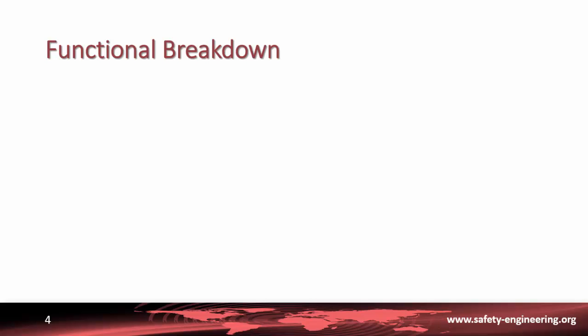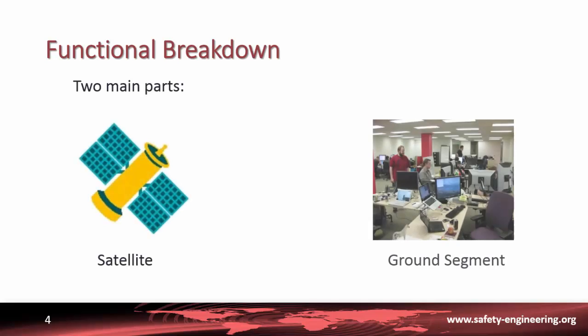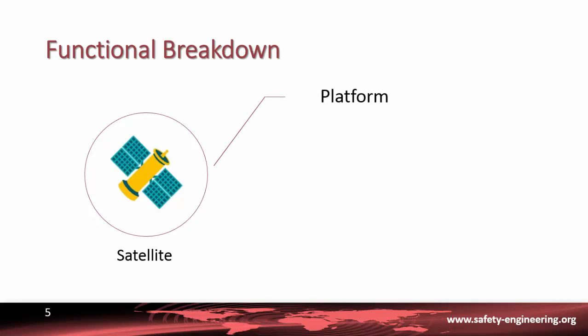The functional breakdown allows us to identify the different parts of the satellite. We can separate the system into two main parts, the satellite and the ground segment. Now, we can divide the satellite into two parts, the platform and the payload.